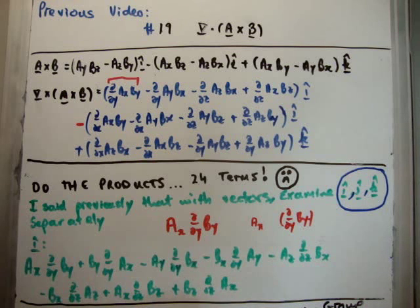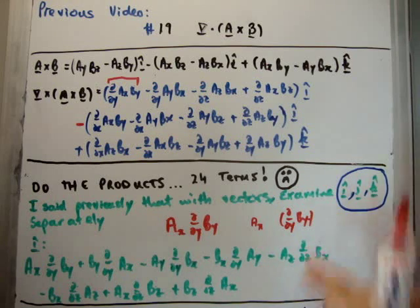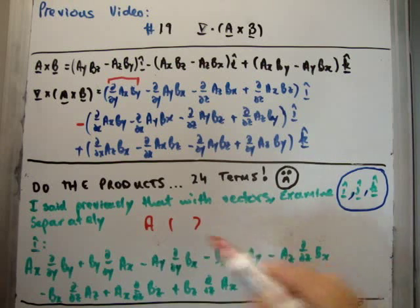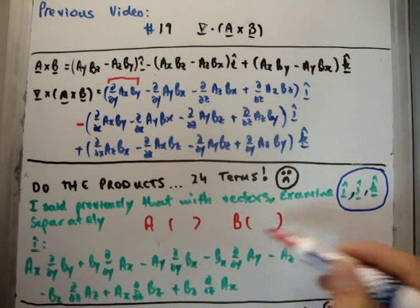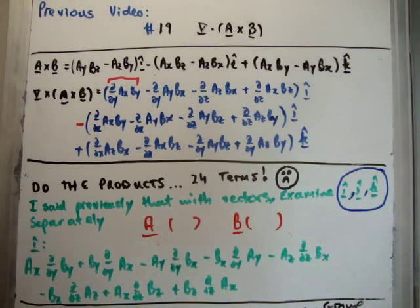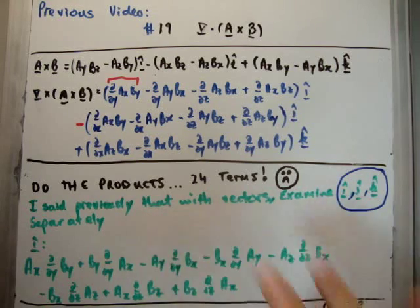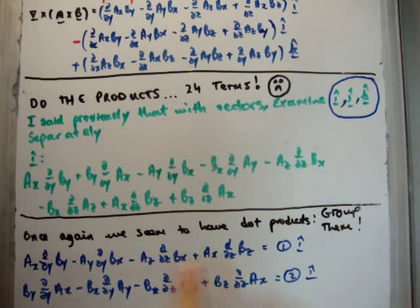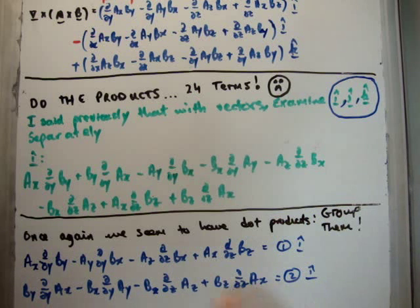If you look, we have b sub x terms as well as b sub z, b sub x and b sub y terms. So it looks like we have something with a sub x, y and z — the vector A multiplied by something — and also B multiplied by something. So how about we isolate the terms that are pre-multiplied by A and those pre-multiplied by B. We get the following: two components in the i-hat direction — number one where A is pre-multiplied, and number two where B is pre-multiplied.